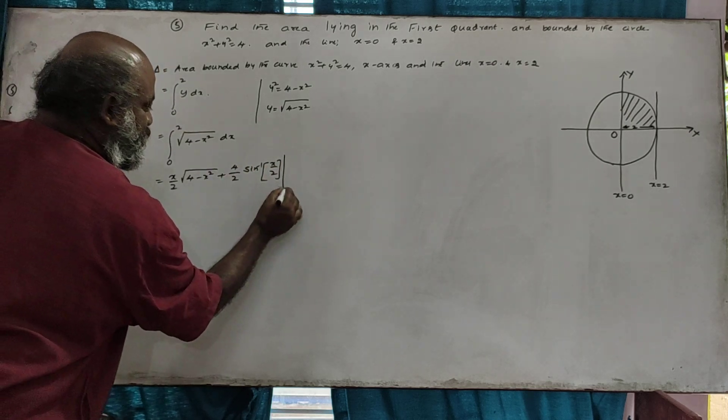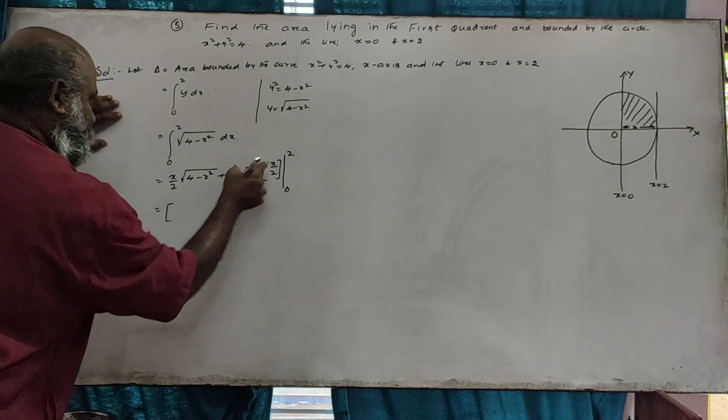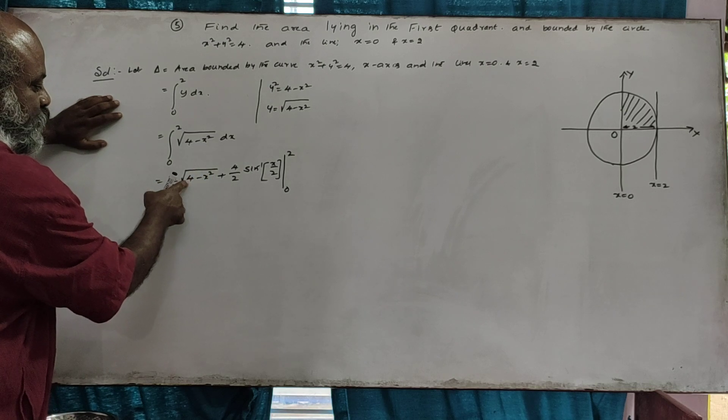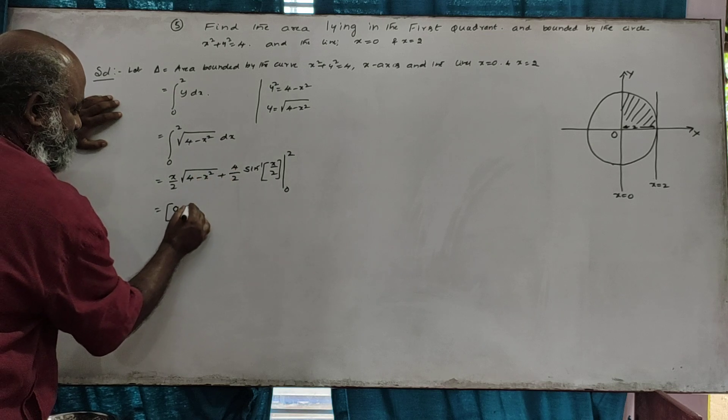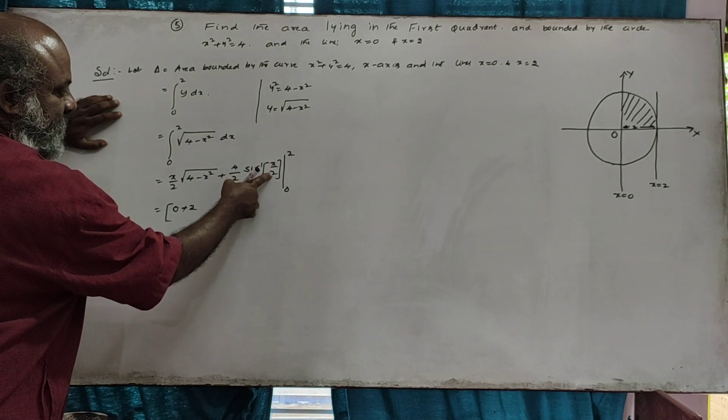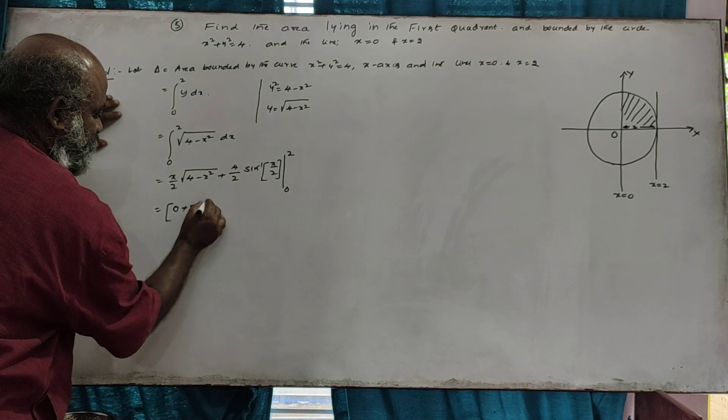Evaluating from 0 to 2. At the upper limit x equals 2: 2 squared equals 4, 4 minus 4 equals 0. Then 4 over 2 equals 2, times sine inverse of 2 over 2, which is sine inverse of 1, equals pi over 2.